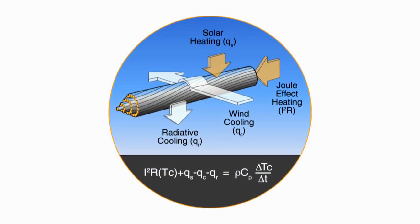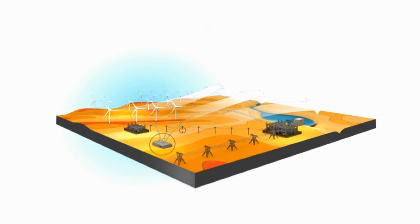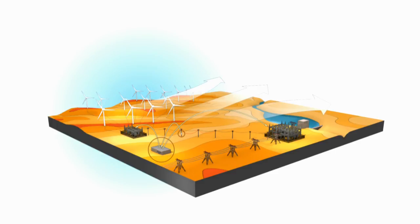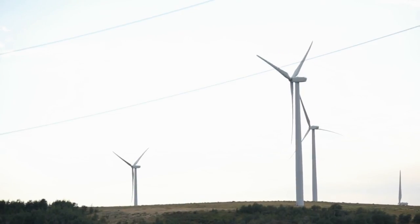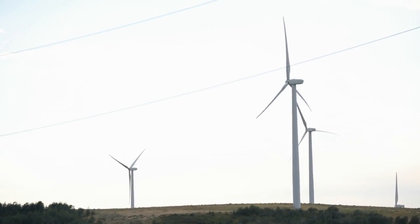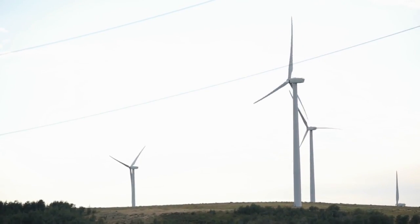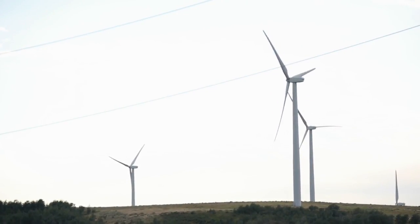Traditionally, the amount of power transmitted through lines is bounded by static limits set with conservative weather assumptions. Yet varying environmental factors can change the amount of cooling on power lines and allow for increased current loads. In fact, lines near wind farms are ideally suited to handle extra electricity generated on windy days.